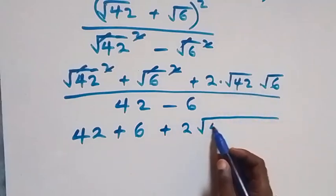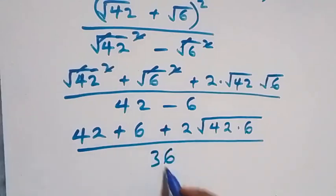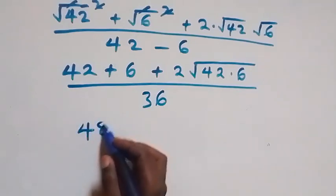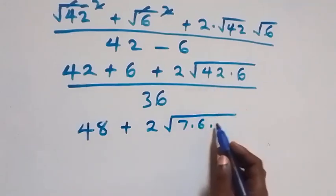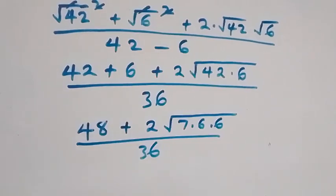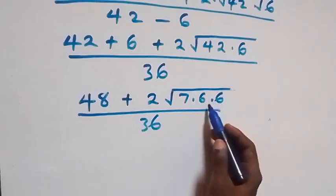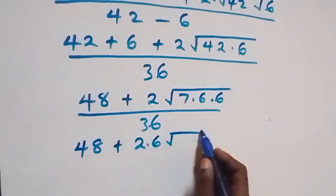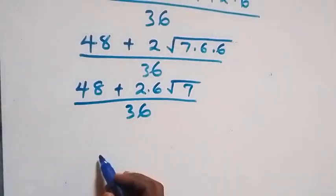Bringing together 42 times 6 under the square root in the numerator. The denominator becomes 36. The numerator becomes 42 plus 6, which is 48, plus 2 times root of 42 times 6. We can write 42 times 6, and 6 times 6 is 36, so we get 48 plus 2 times 6, times root 7, over 36.